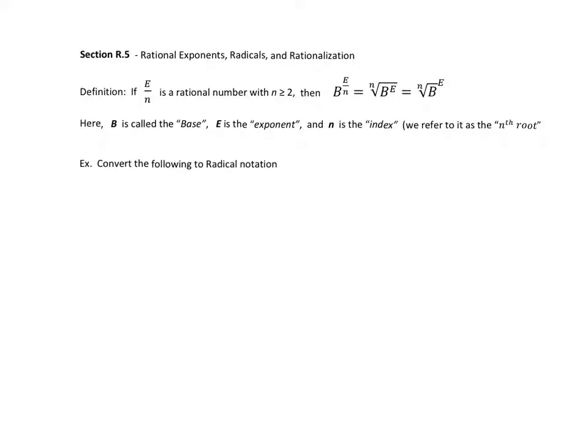Let's talk a little bit about rational exponents and radicals. If e over n is a rational number with n greater than or equal to 2, then b to the e over n can be rewritten in radical form, which is the nth root of b to the e power.